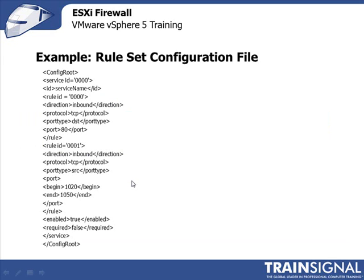Let me give you an example of what a rule set configuration file looks like. We'll see how the values and options from the earlier table fit into a single configuration file. This example is taken right out of the VMware admin guide — just to show how the file is constructed, especially for those who want to use these configuration files to configure the ESXi firewall from command line.